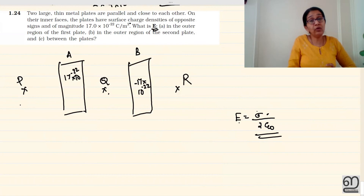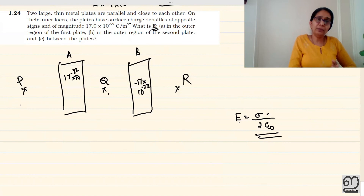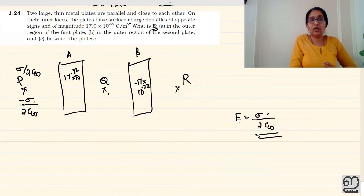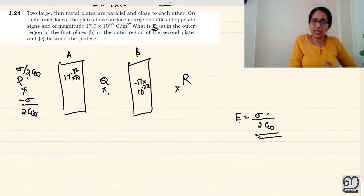The electric field depends only on sigma — the surface charge density. In plate A, the electric field contribution is sigma by 2ε₀. In plate B, the surface charge density is negative, giving minus sigma by 2ε₀. The other contribution from B is plus sigma by 2ε₀ in the opposite direction.